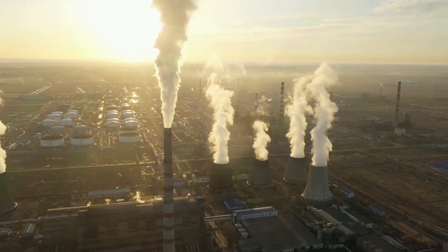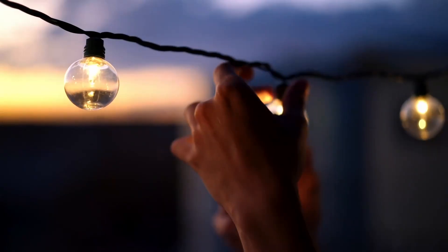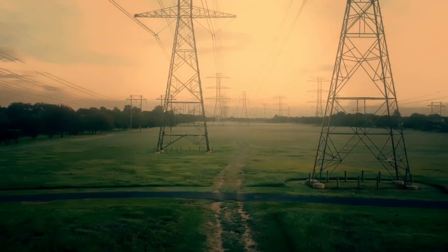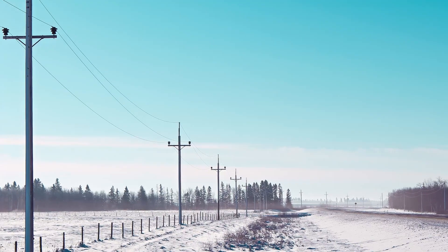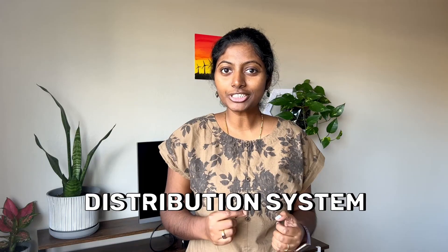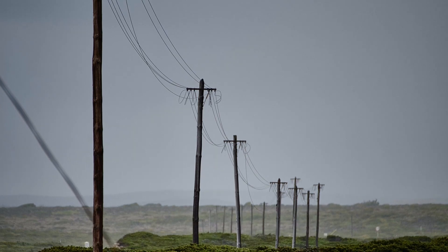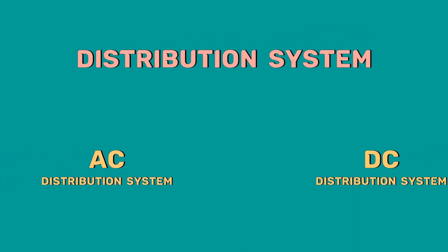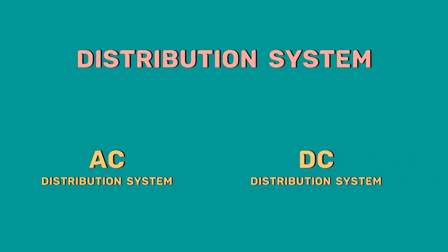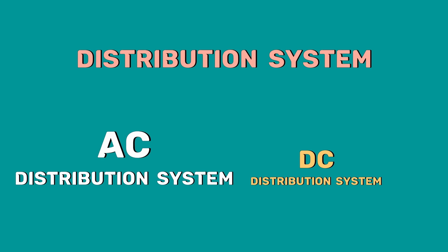The electricity is generated in power plants and is conveyed to consumers through a transmission and distribution system network. The distribution system is the part of the power system that distributes power to consumers for utilization. According to the nature of current, the distribution system may be classified as AC distribution system and DC distribution system. In this video, I am going to concentrate on AC distribution system.